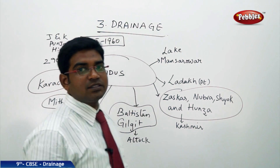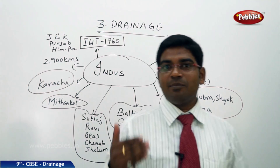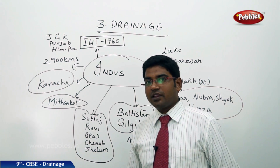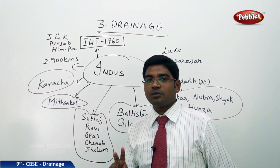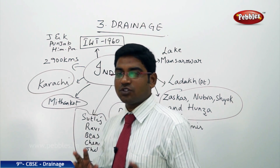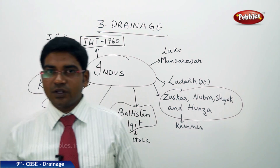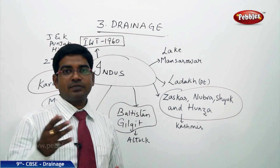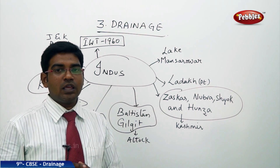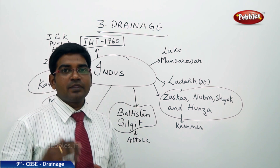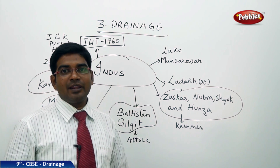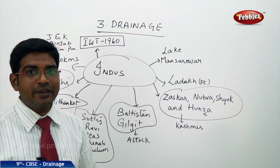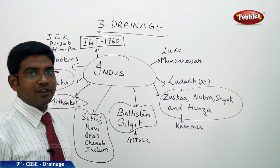Now we shall discuss about the Himalayan rivers. As mentioned earlier, we have two major broad categorizations of rivers: the Himalayan rivers and the Peninsular rivers. Among the Himalayan rivers, the first most important one is River Indus.